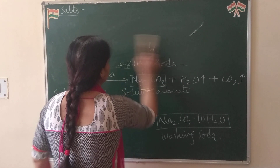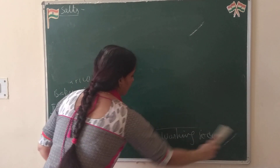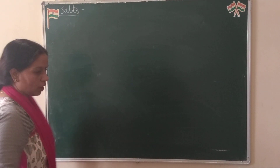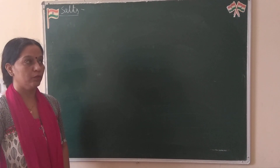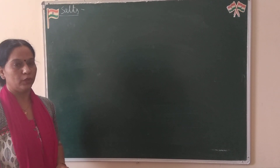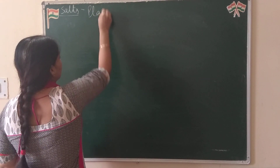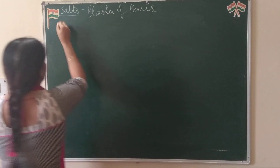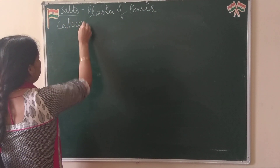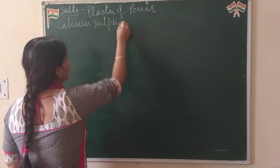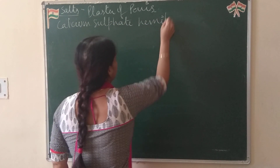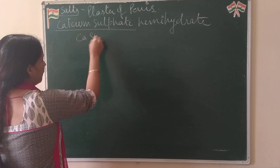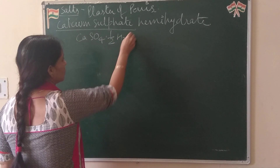The second topic is plaster of Paris. You are all very much aware about plaster of Paris because you have seen decorations on the ceilings and pillars of buildings — those statues are all composed of plaster of Paris. Chemically, it is calcium sulfate hemi-hydrate: CaSO4·½H2O.